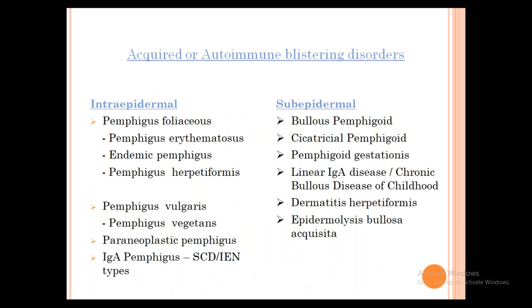Acquired or autoimmune blistering disorders are classified into two categories: intra-epidermal or sub-epidermal. Intra-epidermal includes Pemphigus Foliaceus (and its variants: Pemphigus Erythematosus, endemic Pemphigus/Fogo Selvagem, Pemphigus Herpetiformis), Pemphigus Vulgaris (and its variant Pemphigus Vegetans), Paraneoplastic Pemphigus, and IgA Pemphigus. Sub-epidermal includes Bullous Pemphigoid, Cicatricial Pemphigoid, Pemphigoid Gestationis, Linear IgA Disease, Dermatitis Herpetiformis, and Epidermolysis Bullosa Acquisita.